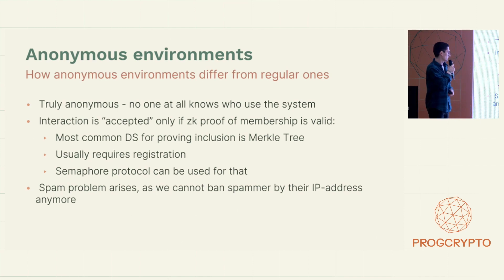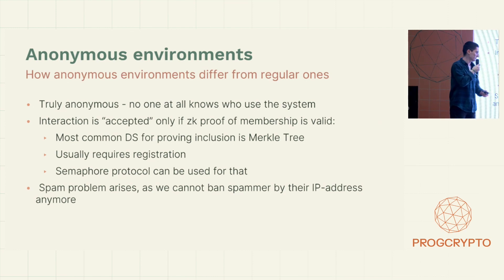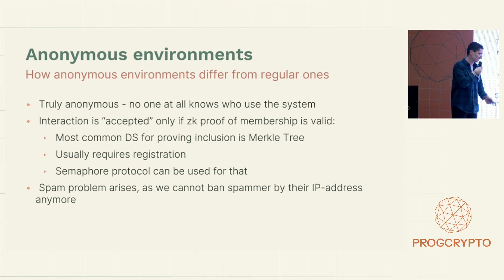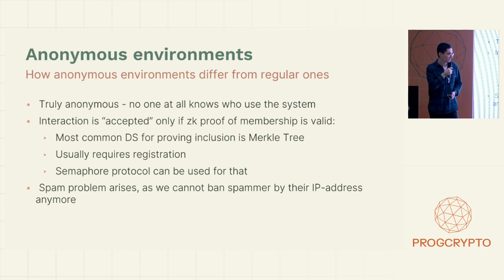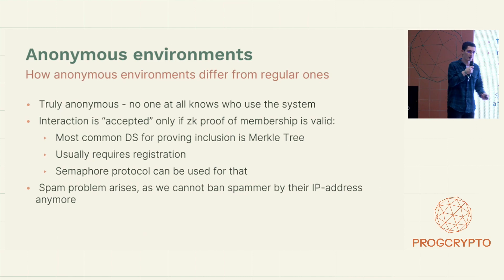But you may notice that a spam problem arises here. In a regular system, we can just ban a user by their profile. But here we don't have any profiles, so we can only try to ban a spammer by their IP address. But that's not enough because a spammer can easily switch their IP address and still do a ZK proof of membership. The only thing we can do is disclose the identity of the spammer and remove them from the Merkle tree. RLN actually helps with that.